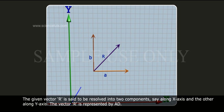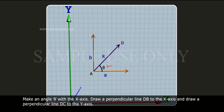The given vector r is said to be resolved into two components, one along the x-axis and the other along the y-axis. The vector r is represented by AD, making an angle theta with the x-axis. Draw a perpendicular line DB to the x-axis, and draw a perpendicular line DC to the y-axis.